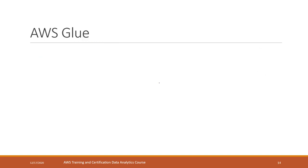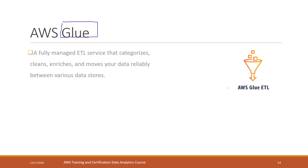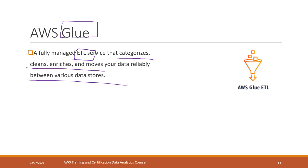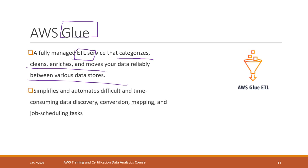In today's lab, I also want to introduce another ETL process called Glue. Glue is a fully managed ETL service on AWS that can categorize, clean, enrich, and also move your data between different data stores and models.